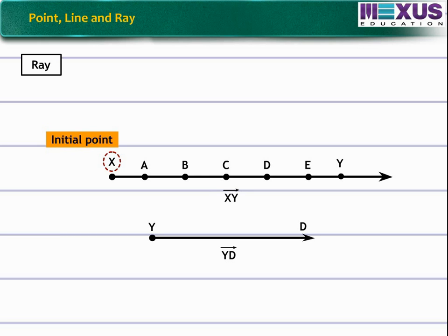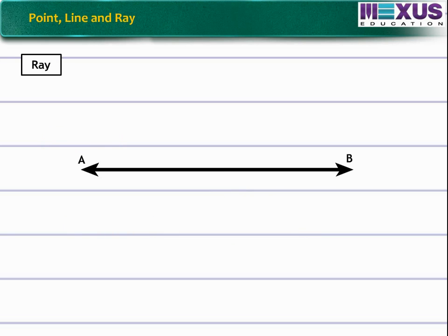For ray YD, Y is initial point. Now, in line AB, here point X lies between A and B and ray XA and ray XB are parts of line AB. That is, a ray is a part of a line.